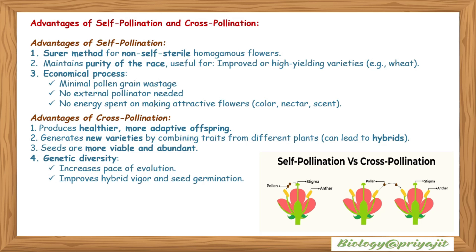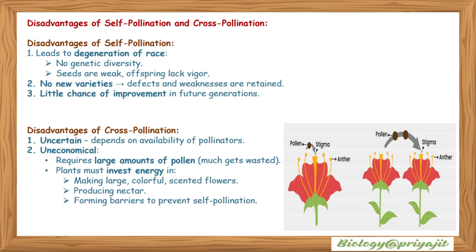Advantages of cross-pollination: produces healthier, more adaptive offspring; generates new varieties by combining traits from different plants, which can lead to hybrids; seeds are more viable and abundant; genetic diversity increases the pace of evolution; and it improves hybrid vigor and seed germination. Disadvantages of self-pollination: it leads to degeneration of the race; no genetic diversity; seeds are weak; offspring lack vigor; defects and weaknesses are retained.